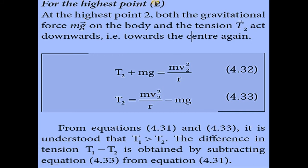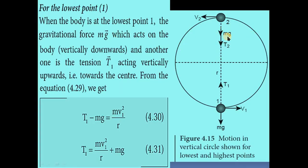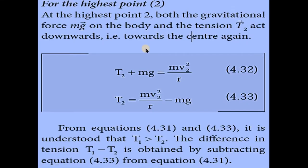At the highest point 2, both the gravitational force Mg and the tension T2 act downward, i.e., towards the center. So T2 plus Mg equals MV2 squared divided by R. Rearranging: T2 equals MV2 squared divided by R minus Mg.